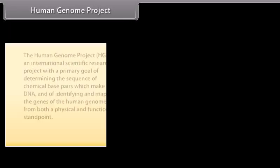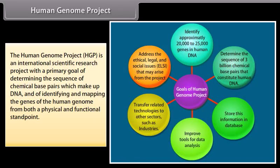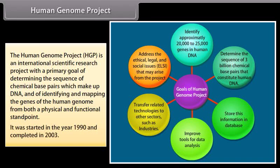Human Genome Project. The Human Genome Project (HGP) is an international scientific research project with the primary goal of determining the sequence of chemical base pairs which make up DNA, and of identifying and mapping the genes of the human genome from both a physical and functional standpoint. It was started in the year 1990 and completed in 2003.